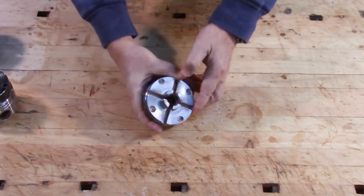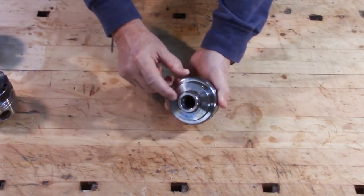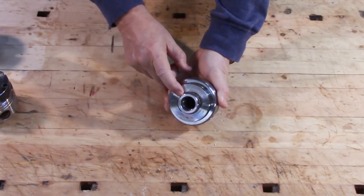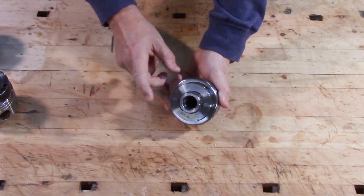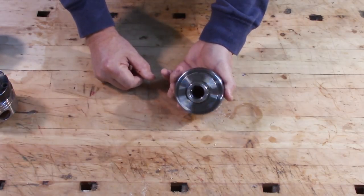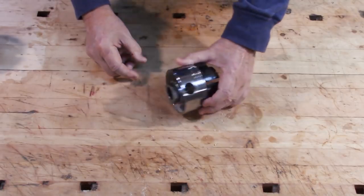Not every chuck has those inserts in it. The Nova MIDI chuck, see right here, it's direct threaded. There is no insert here. You buy this to specifically fit one headstock spindle. And if you switch lathes, you're going to have to buy another one because there isn't an adapter or anything, at least not from Nova.